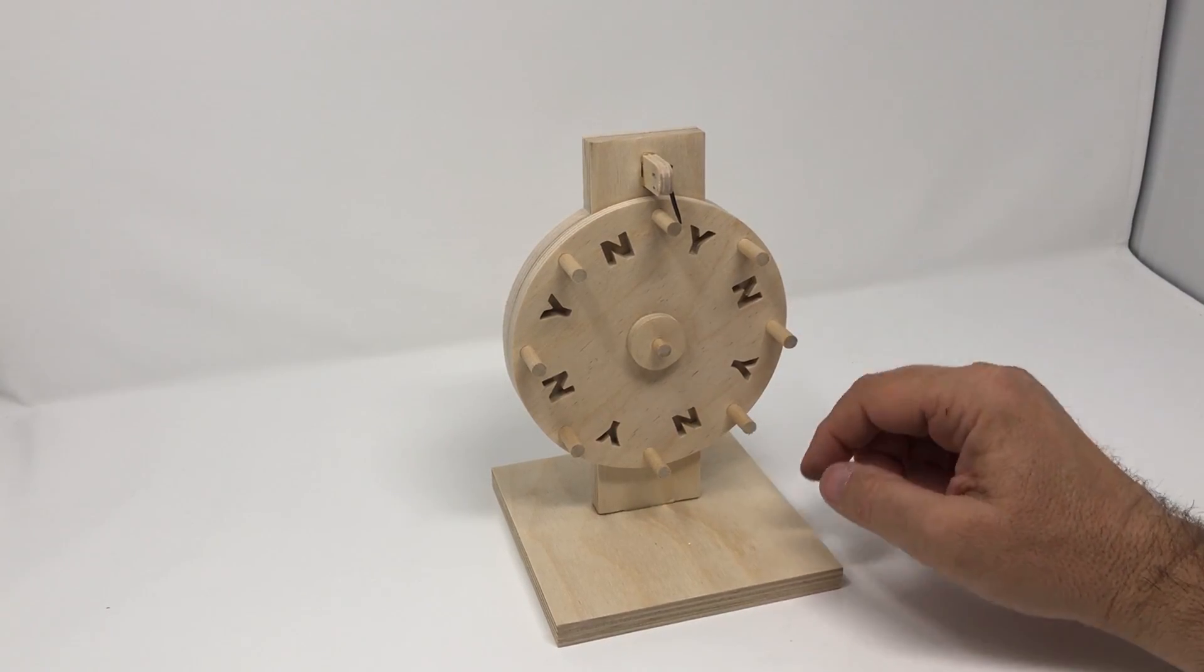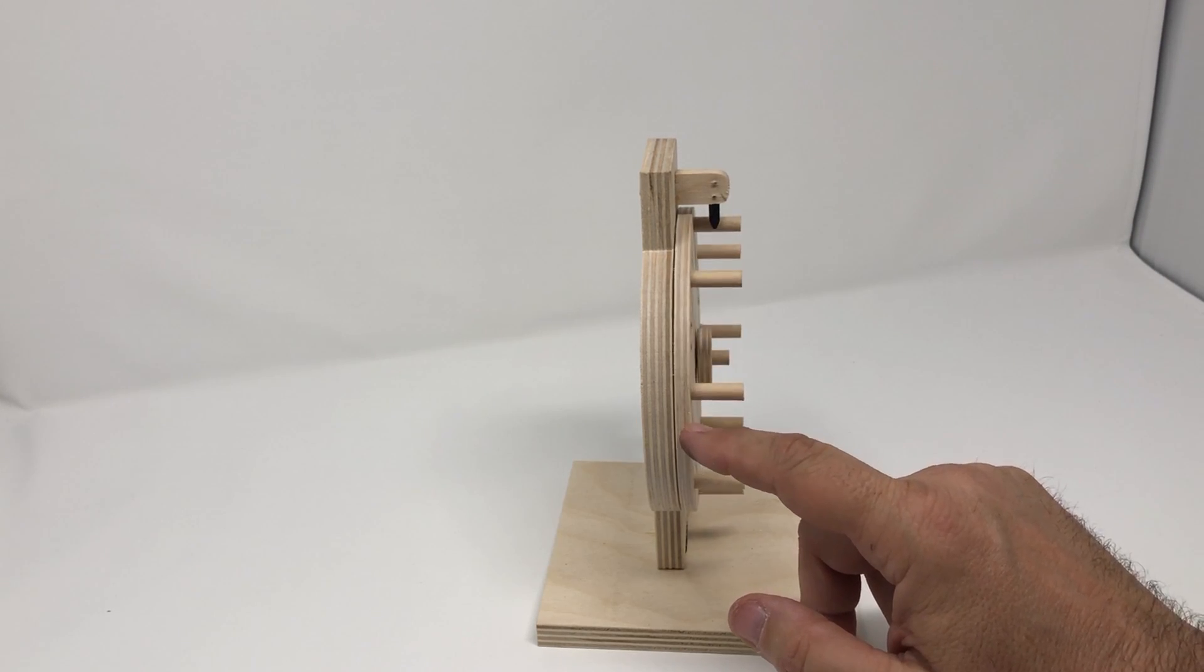First of all, the frame is built from 1½ inch thick Baltic birch plywood. The wheel is built from 1¼ inch Baltic birch plywood. The dowels are 1¼ inch dowels.